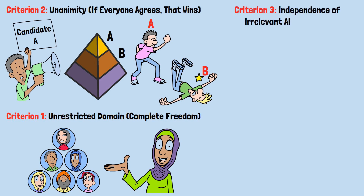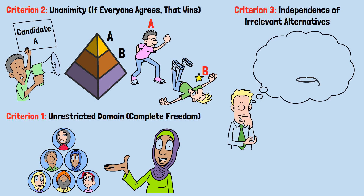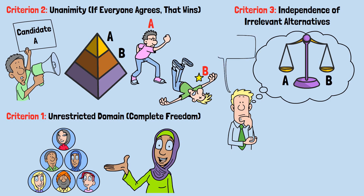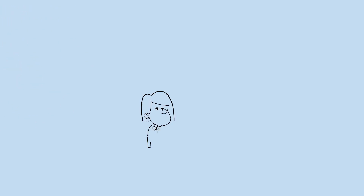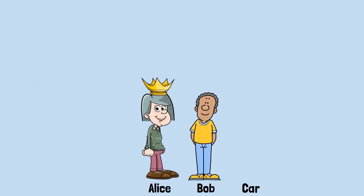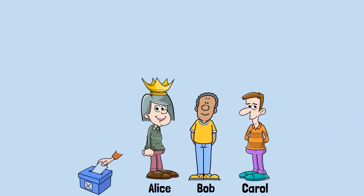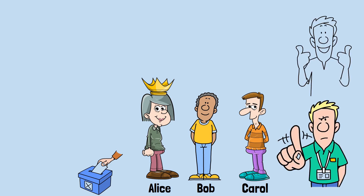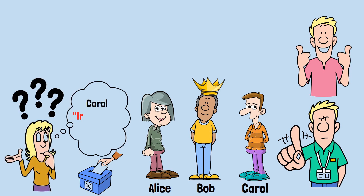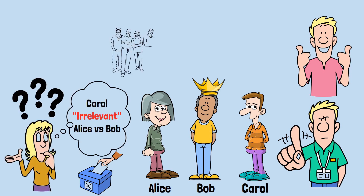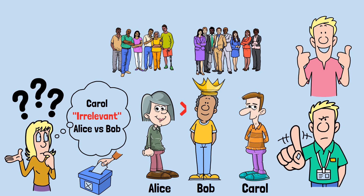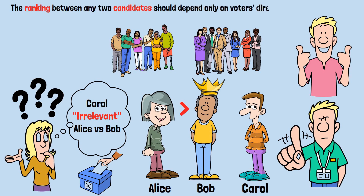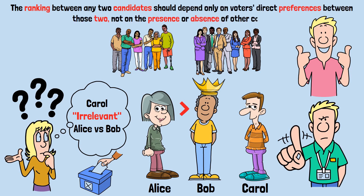Criterion 3: Independence of irrelevant alternatives. The relative ranking between A and B should only depend on how people compare A to B, not on what they think about some third candidate C. Say there's an election — Alice versus Bob — and Alice wins. Now Carol enters the race, people vote again, and nobody changed their minds about Alice versus Bob. But now Bob wins because Carol's entry changed the vote dynamics. Carol is irrelevant to the Alice-Bob comparison — if everyone's relative preference between Alice and Bob stayed the same, shouldn't Alice still beat Bob? This criterion says the ranking between any two candidates should depend only on voters' direct preferences between those two, not on the presence or absence of other candidates.